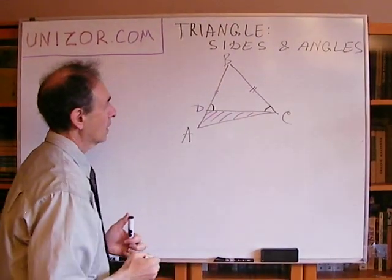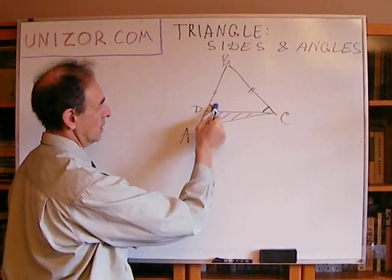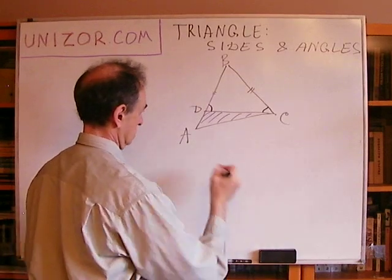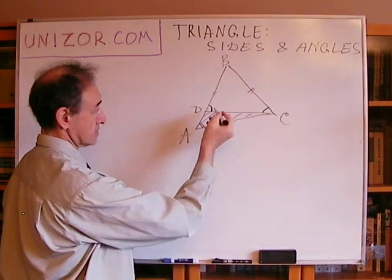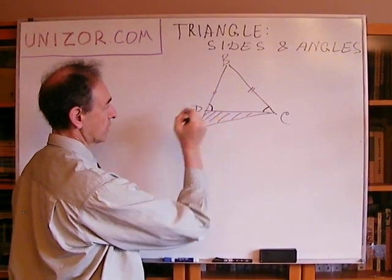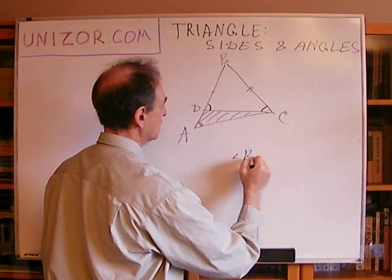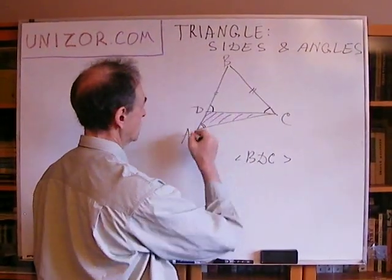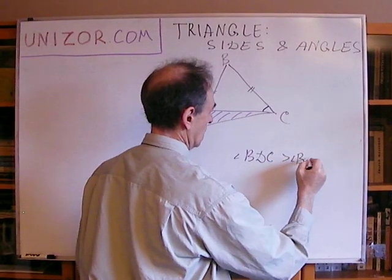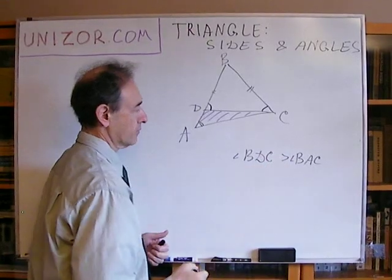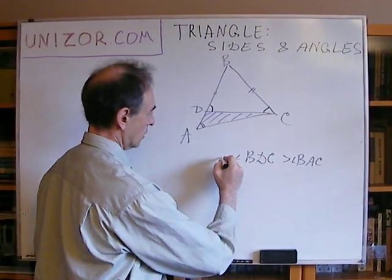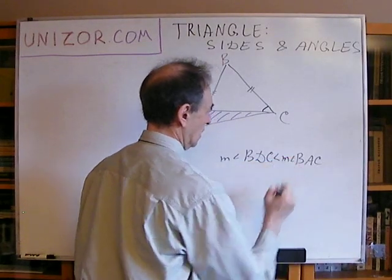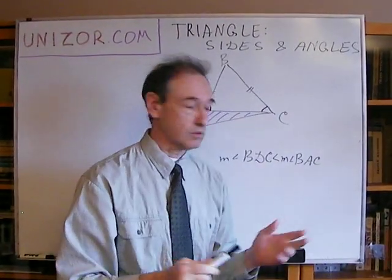Consider now this triangle, triangle ADC. Angle BDC, this angle, is exterior, and that's why it's bigger than angle A. Because it's an exterior angle, and it's bigger than any interior, not supplemental to it. All right, so angle BDC measures greater than BAC. Well, when I'm using the symbol greater, I mean measure of these angles. I could have put more traditionally letter M in front of it. But it's quite well understood without it.